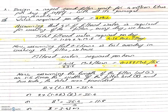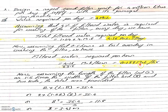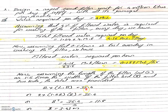Now we calculate the length and breadth. Assuming the length as 1.5 times the width of the filter bed, and for 2 beds, the total area provided is 2 × L × B = 35.4 square meters. This 35.4 square meters is the total bed area, calculated by dividing the filtered water required per hour (0.177 million liters) by the filtration rate of 5,000 liters per hour per square meter.